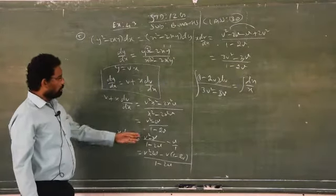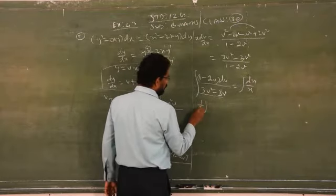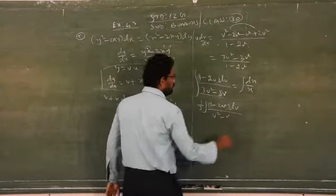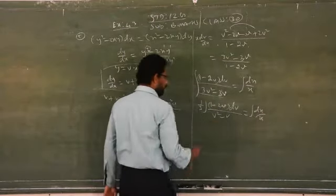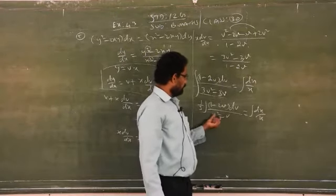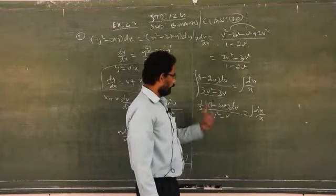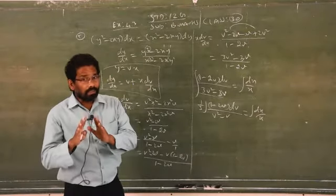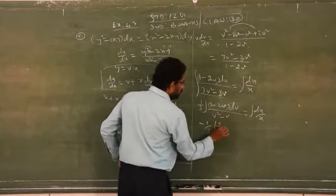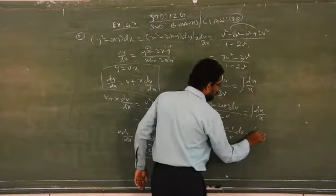So, minus 2v minus that is minus 3v, so it will be 3v. Is there any other problem? No. What is the common factor of these two? You can take 1/3 outside: (1 minus 2v) dv over (v² minus v) is equal to dx/x. You can take 1 minus outside — minus 1/3 — then: (2v minus 1) over (v² minus v) dv is equal to integration of dx/x.